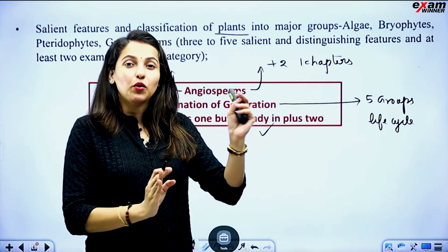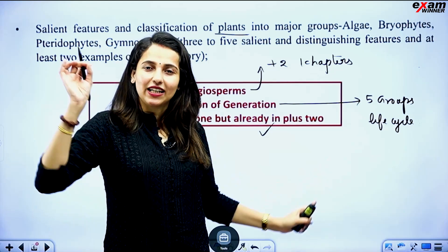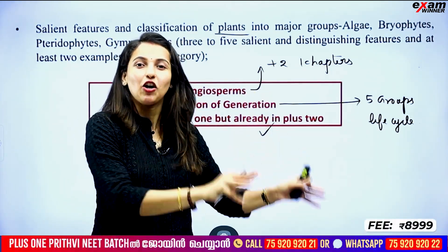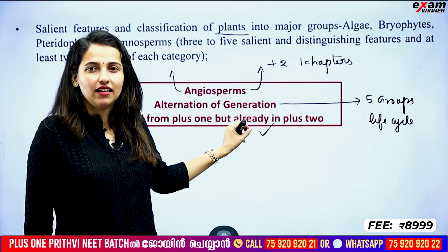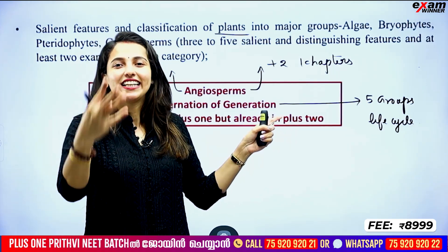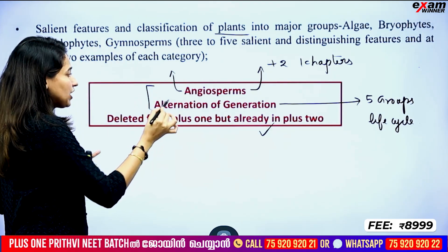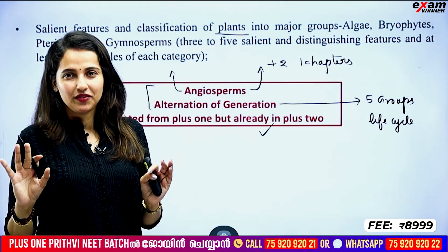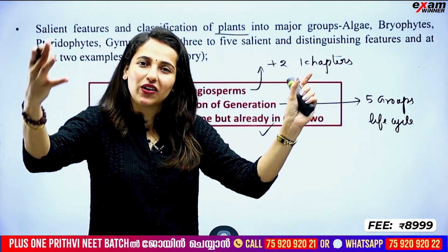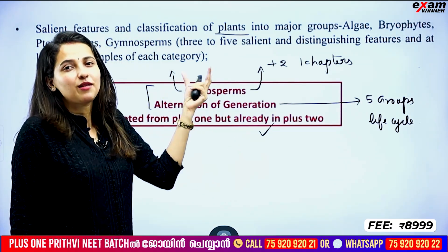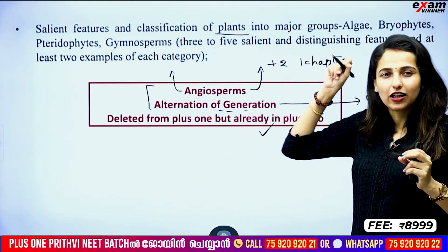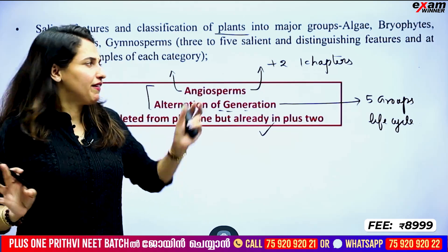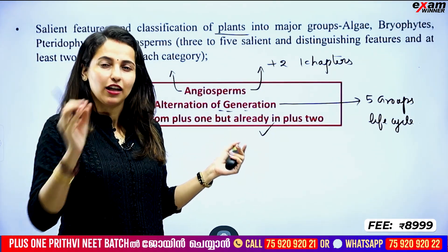This topic is what you call the life cycle of these five groups — the Alternation of Generation. There is a separate topic in old NCERT. You learn the life cycle: Algae life cycle, Bryophytes, Pteridophytes. The topic is separated. So if you want to talk about the deletions in Plant Kingdom, because if you want to learn about Algae and Bryophytes, that's already covered.